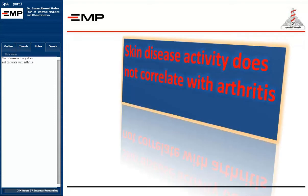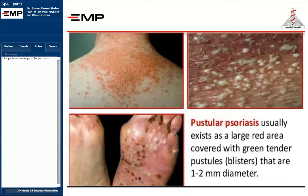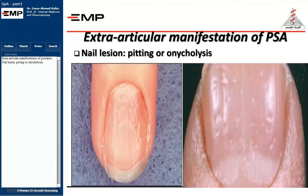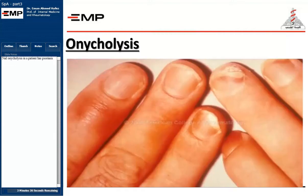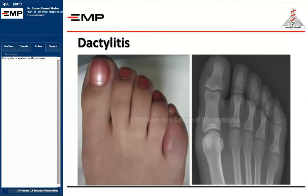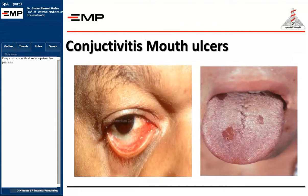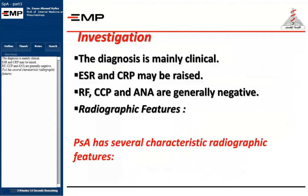Skin disease activity does not correlate with arthritis. This picture shows pustular psoriasis. Extra-articular manifestations of psoriasis include nail lesions such as pitting or onycholysis, dactylitis, conjunctivitis, and mouth ulcers. Diagnosis is mainly clinical.